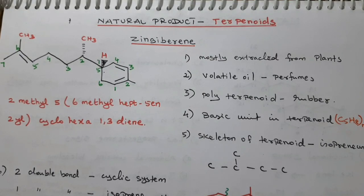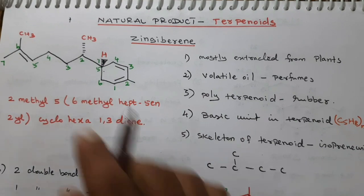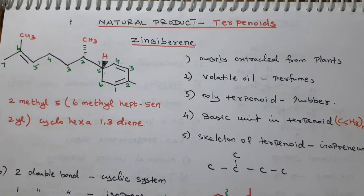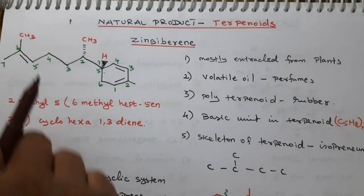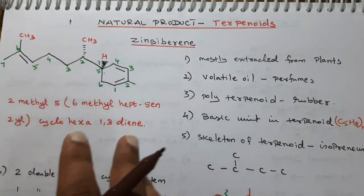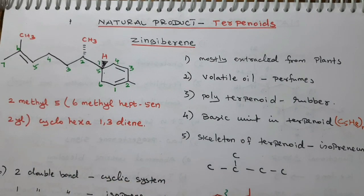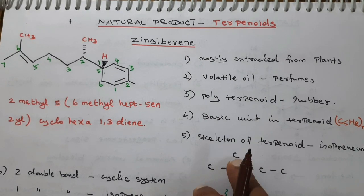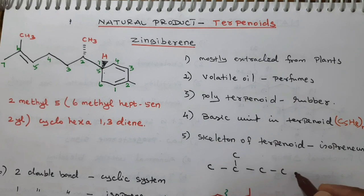Good morning students. Now we are going to talk about Terpenoids Zingiberene. Zingiberene is a natural product. In the Zingiberene structure, we are going to talk about the isoprene unit. Zingiberene is made up of isoprene units. The carbon at the 2nd position is that isoprene unit.